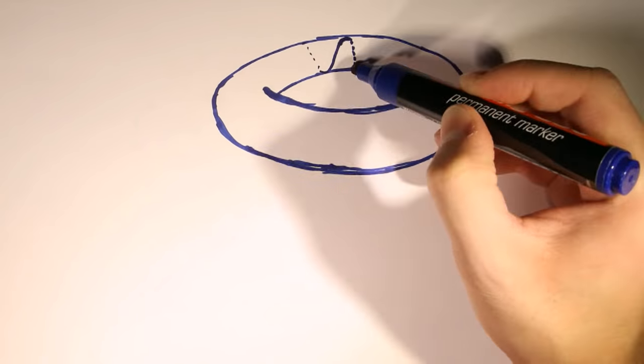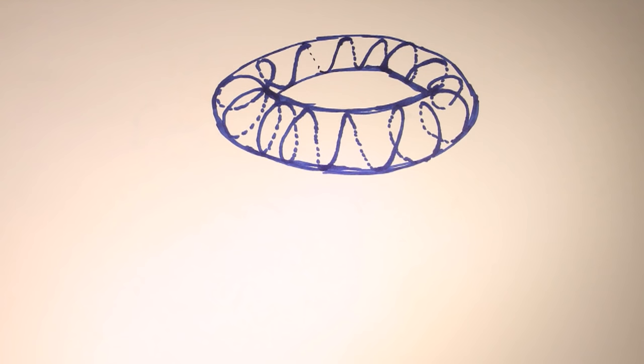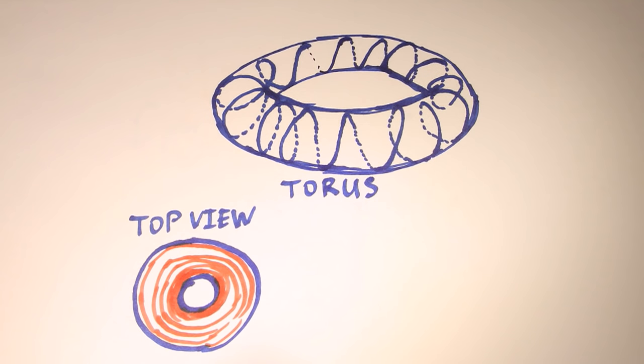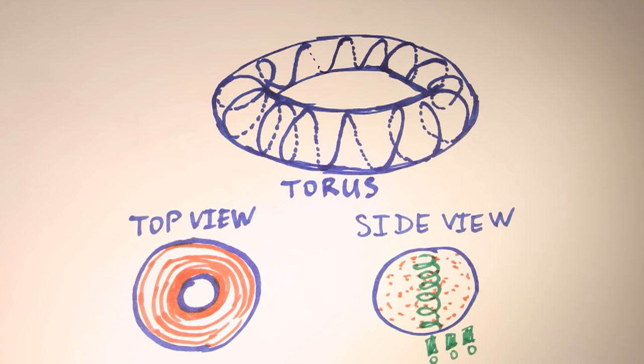The natural idea is to bend it to create a donut shape. This is called a torus in mathematics. Here's where the problems start. Now the magnetic field is stronger on the inside and weaker on the outside. Positively charged particles will move upward, while negatively charged particles move downward. The confinement is lost.